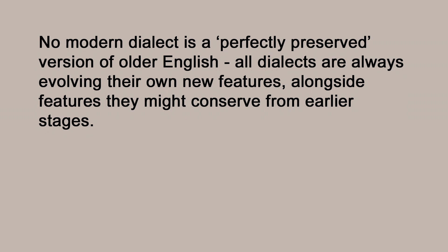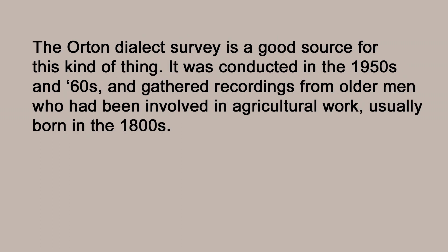These rural places have conserved some features of older southern English speech while London innovates new ones. If rural dialects over a really broad geographic area have something in common, that thing might be an older feature of a prestige dialect from a big city in the middle. Looking at southern dialect speakers born in the late 1800s, we find that loads of them have monophthongs for the 'face' and 'goat' vowels — those that don't tend to come from quite near London.